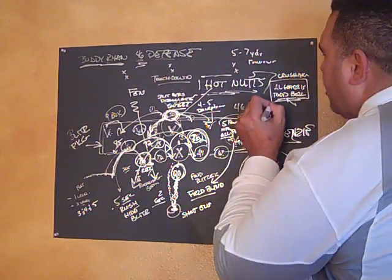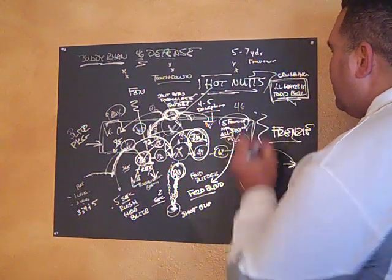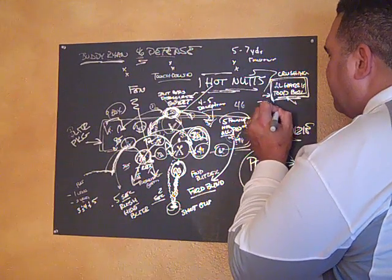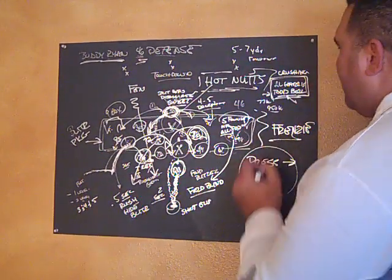They were going to negotiate a contract at the beginning of the season. Todd Bell was an all-pro, he's making 77 grand, he wanted 950 grand, he deserved it.